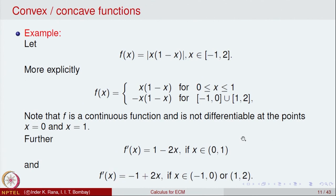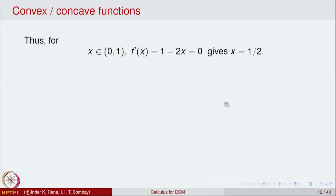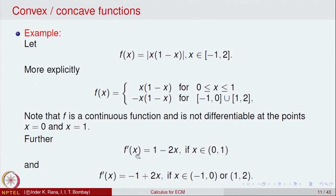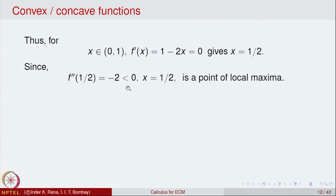To find local maxima and minima we set the derivative equal to zero. In (0, 1), setting 1 − 2x = 0 gives x = 1/2. In (−1, 0) and (1, 2), setting −1 + 2x = 0 also gives x = 1/2, which is outside those intervals. So the only critical point is x = 1/2. The second derivative there is −2 < 0, confirming x = 1/2 is a local maximum.